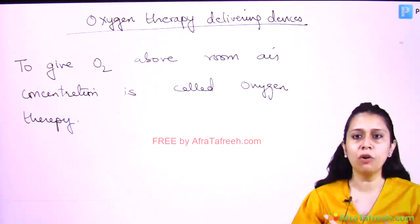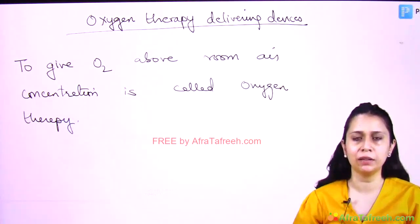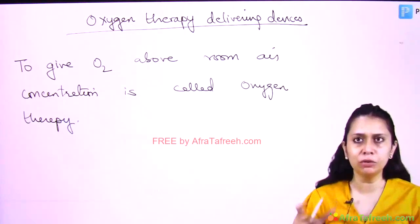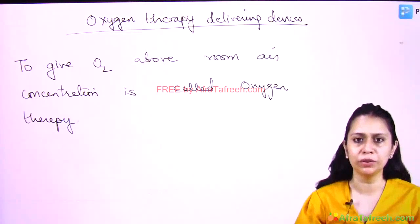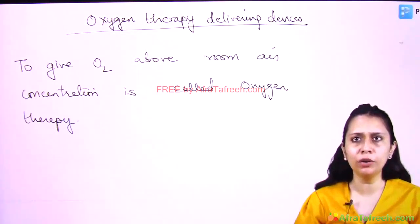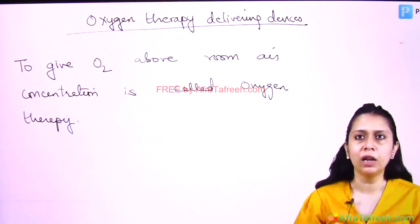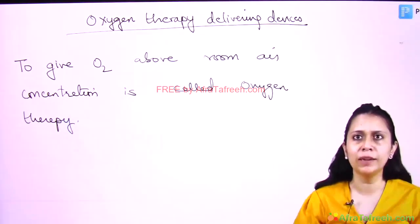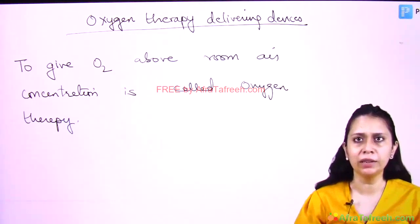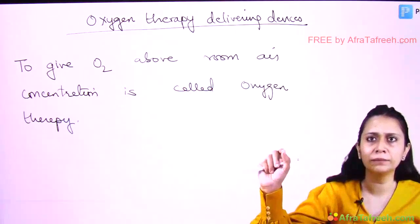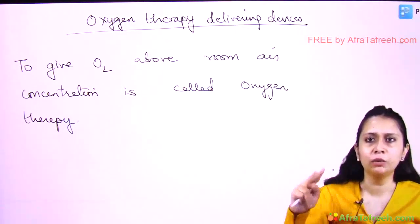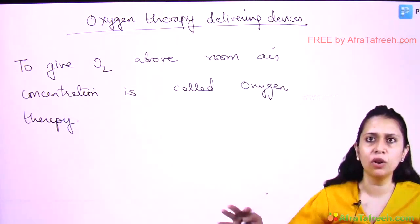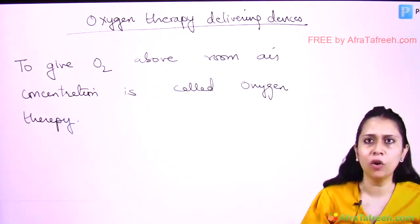Hello students. I will discuss with you oxygen therapy delivering devices — those devices which we use to deliver oxygen to the patient. In this chapter, I will not go into the physiology of oxygen therapy. I will only stick to the discussion of devices: in what condition we choose a device and what FiO2 is delivered by that device. The definition of oxygen therapy is to give oxygen above room air concentration. Room air oxygen concentration is 21 percent, so when we give above this, we call it oxygen therapy.